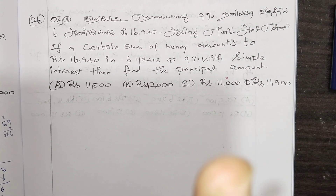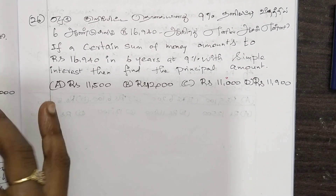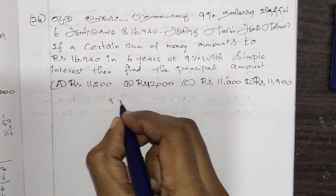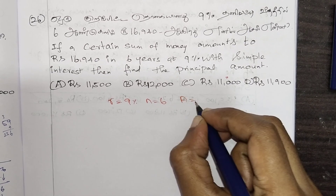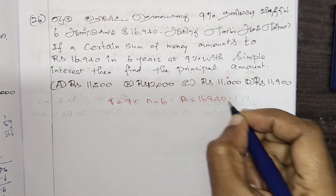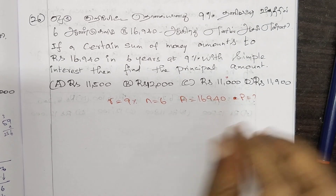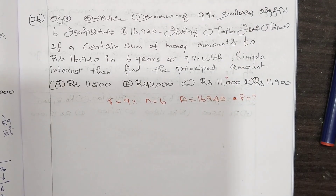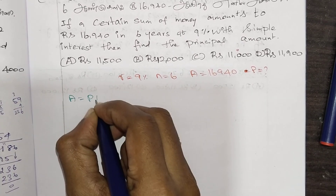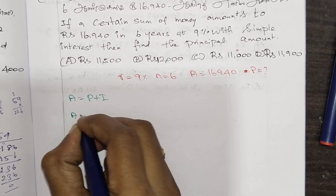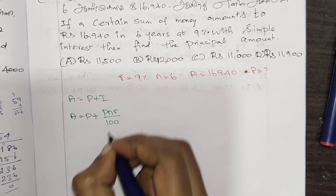Exercise 2.4 involves simple interest. This is the last example. The formula we use is: A equals P plus I, where I equals P times N times R divided by 100. So A equals P plus PNR by 100.